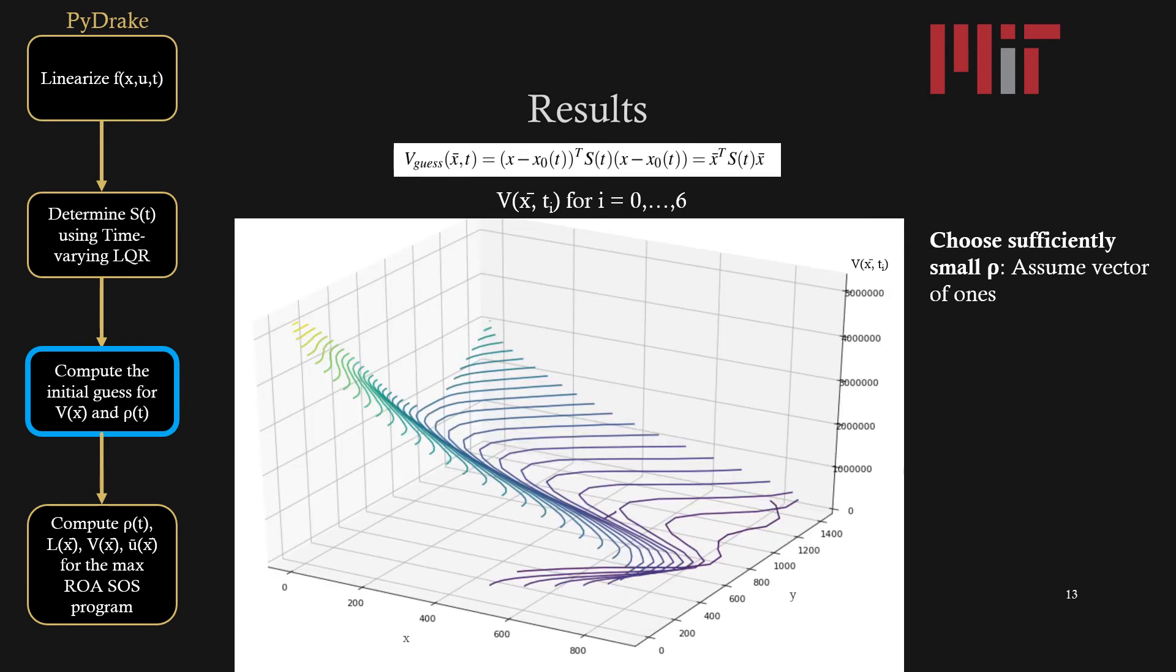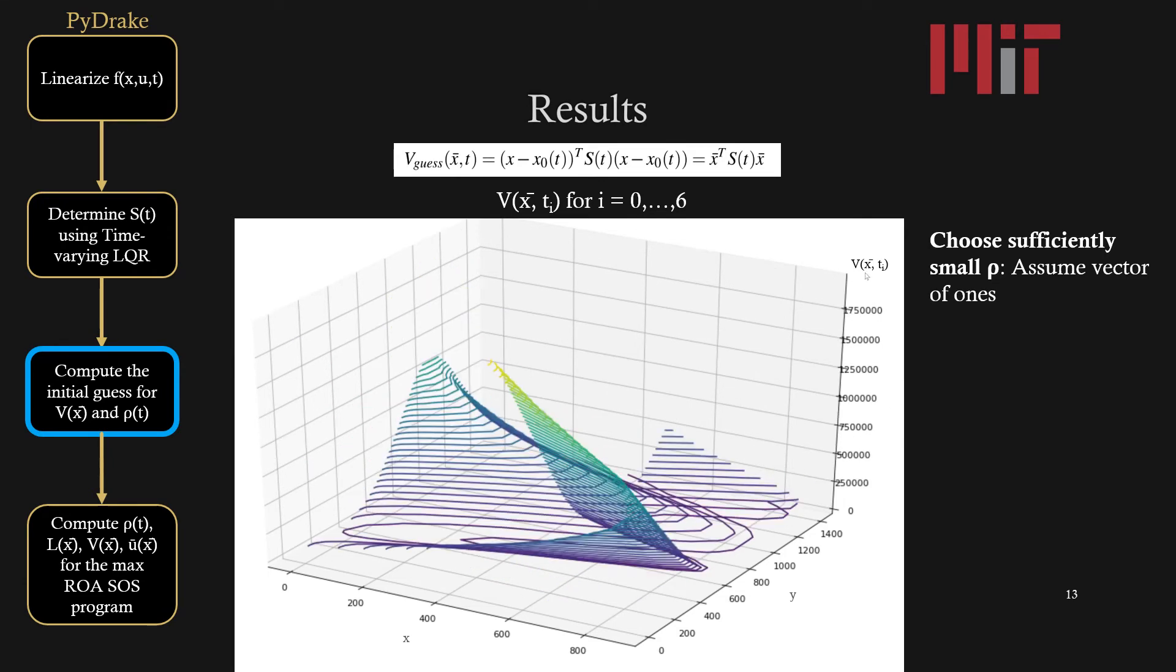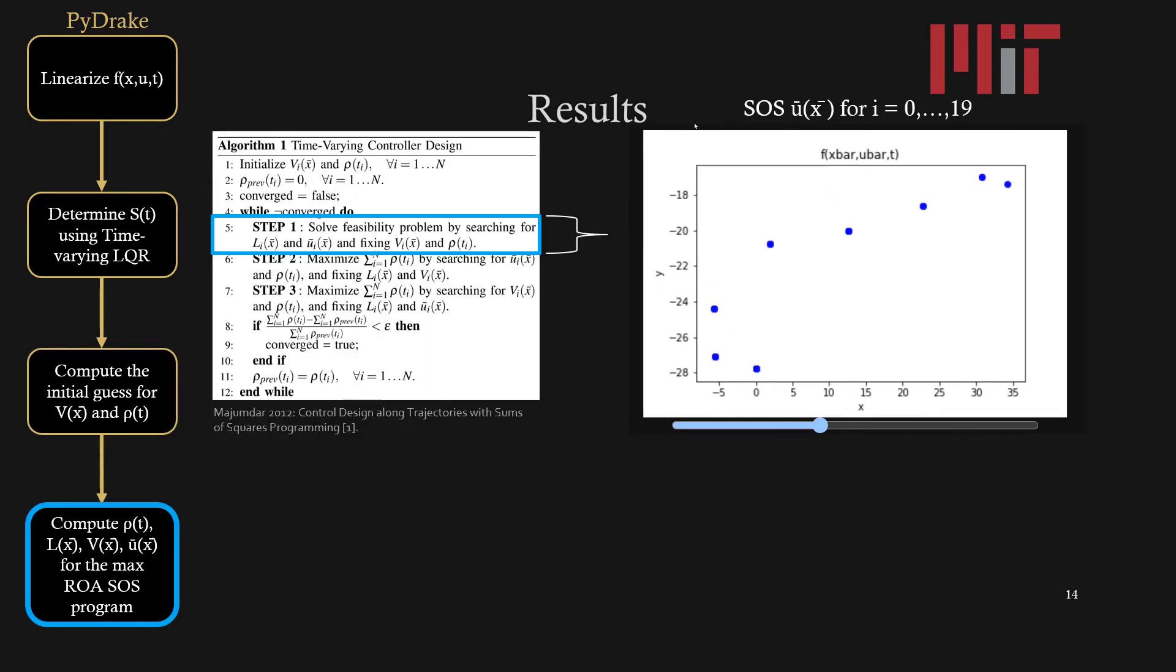To determine what rho would be, I chose a sufficiently small value of a vector of ones. For the unconstrained Lyapunov control problem, I implemented the time varying controller design shown in steps one through three. And in step one, you can see the solution to U-bar as implemented in the system dynamics.